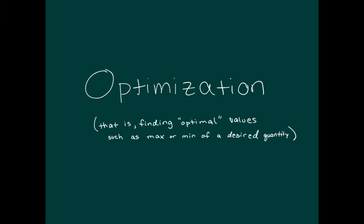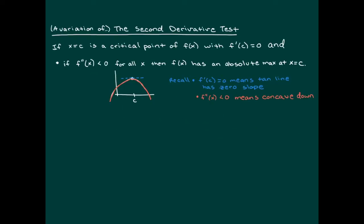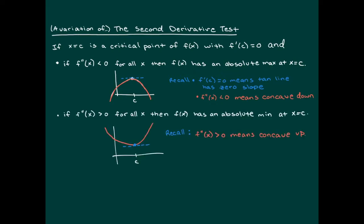We'll come back to the concepts of max or min from previous videos. We're going to use what's called a variation of the second derivative test. If x equals c is a critical point where the first derivative equals zero, and the second derivative is negative — meaning the function is concave down for all x with only this one critical point at the top — then there must be an absolute max at x equals c.